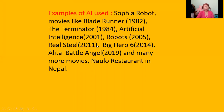Examples of AI-based systems include Sophia Robot; movies like Blade Runner (1982), The Terminator (1984), Artificial Intelligence (2001), Robots (2005), Real Steel (2011), Big Hero 6 (2014), Alita: Battle Angel (2019), and many more. Sophia Robot was brought to Nepal for the first time on March 20, 2018.